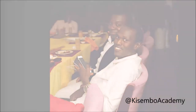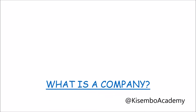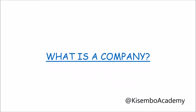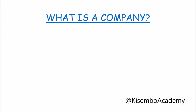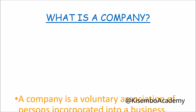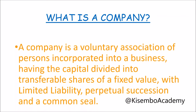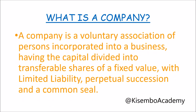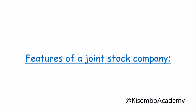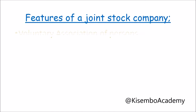A joint stock company is simply a voluntary association of persons incorporated into a business having the capital divided into transferable shares of a fixed face value, with limited liability, perpetual succession, and a common seal. The first feature is a voluntary association of persons in the corporation — that is, two or more people come together at free will to do business and are incorporated under the company's seal.